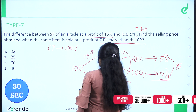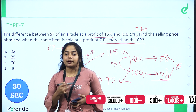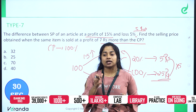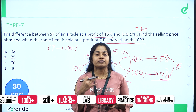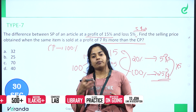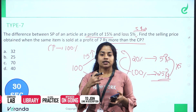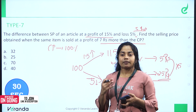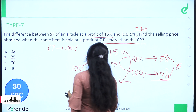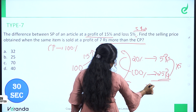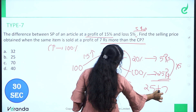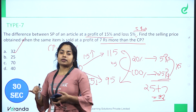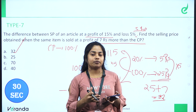So if we take the Cost Price of 25 rupees and add 7 rupees, the Selling Price becomes 32 rupees. Looking at the question: we add 7 rupees to the Cost Price of 25, giving the Selling Price.